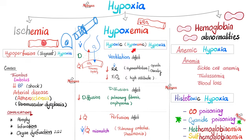Next we have hypoxemia, also known as hypoxemic hypoxia. Here is oxygen in my alveoli. Normally it should diffuse and go to the pulmonary artery. Ventilation means bringing the oxygen to the alveoli. From the alveoli through the pulmonary interstitium is called diffusion. And the pulmonary artery should perfuse the lung with enough blood — this is called perfusion. So hypoxemia could be caused by a ventilation defect, a diffusion defect, or a perfusion defect.